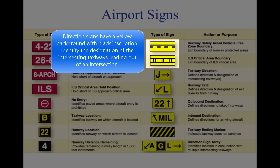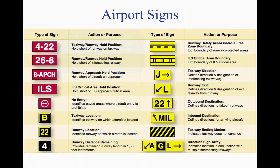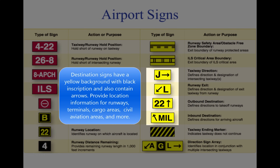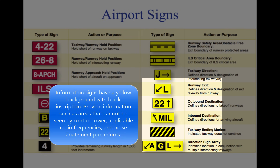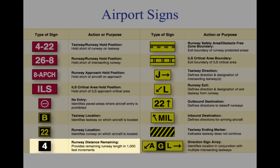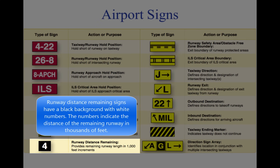Direction signs have a yellow background with black inscription and identify the designation of intersecting taxiways leading out of an intersection. Destination signs also have a yellow background with black inscription but contain arrows, providing information on locating runways, terminals, cargo areas, and civil aviation areas. Information signs have a yellow background with black inscription and provide pilots with information on areas that cannot be seen from the control tower, applicable radio frequencies, and noise abatement procedures; the airport operator determines their need, size, and location. Runway distance remaining signs have a black background with white numbers indicating the remaining runway distance in thousands of feet.